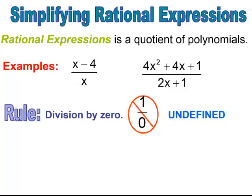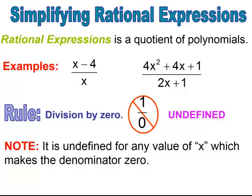A key note with fractions is you cannot have zero in the denominator — you can't divide by zero. So whenever you have zero in the denominator, it is undefined. When we're talking about rational expressions, it is undefined for any value of x, or the variable, which makes the denominator zero.